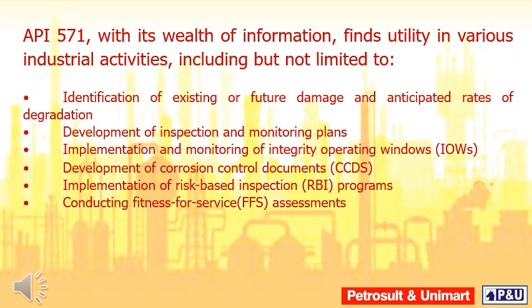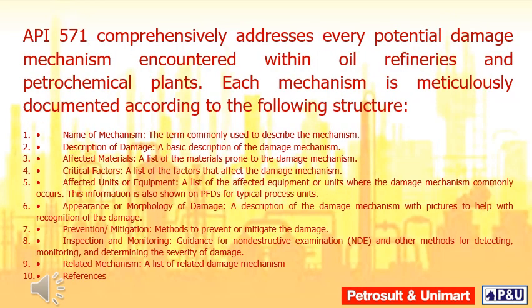API 571, with its wealth of information, finds utility in various industrial activities, including identification of existing or future damage and anticipated rates of degradation, development of inspection and monitoring plans, implementation and monitoring of integrity operating windows, development of corrosion control documents, implementation of risk-based inspection programs, and conducting fitness for service assessments.